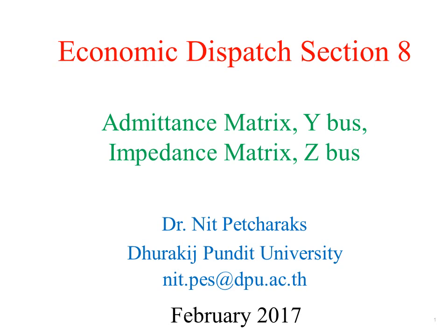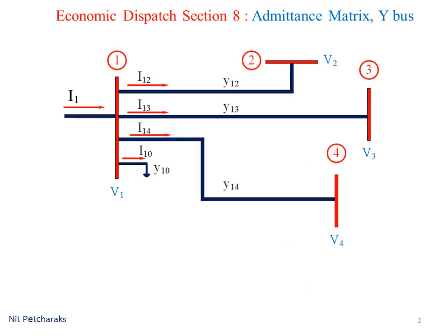Hello, welcome to Economic Dispatch Section 8. We will learn how to create admittance matrix and impedance matrix. Suppose there are four buses. We would like to calculate the current I1 by using Kirchhoff's current law. I1 is the summation of all current flowing out from bus 1.